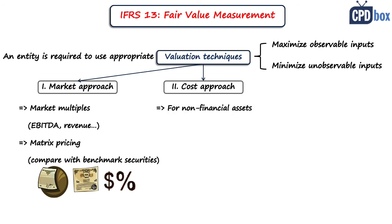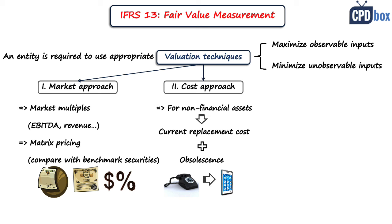The cost approach is applicable mostly to non-financial or physical assets. It reflects the amount currently required to replace the service capacity of the asset — often referred to as current replacement cost — but you must account for the asset's obsolescence. Obsolescence includes physical deterioration, functional or technical obsolescence, and economic obsolescence, such as decreased functionality due to wear and tear or the existence of newer, more efficient technologies.